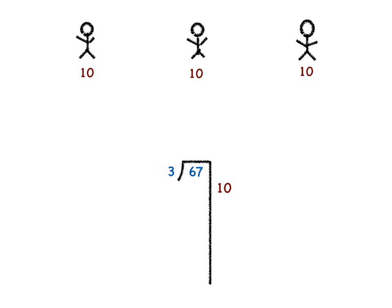How many is that altogether that I gave away? Well, 3 times 10 is 30. So I'll write that here underneath the 67. And now I can figure out how many marbles I have left by subtracting 30 from 67. And I know that that is 37.